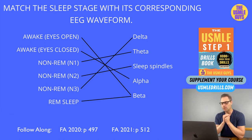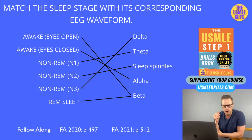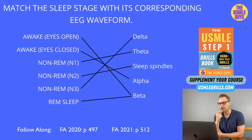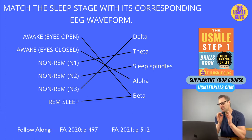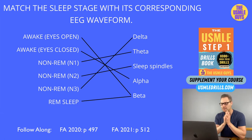Then we go into non-REM sleep with stages N1, N2, and N3. N1, where you spend about 5% of your sleep, is light sleep characterized by theta waves. N2, where you spend the majority of your time — about 45% — is deeper than N1 but not as deep as N3. This stage is characterized by sleep spindles and K-complexes.